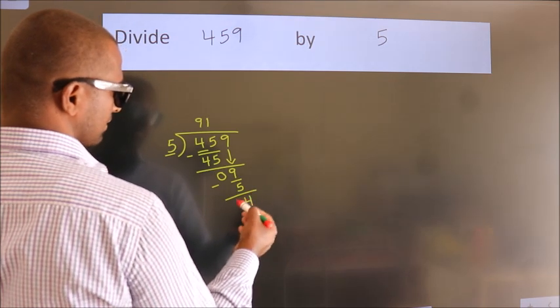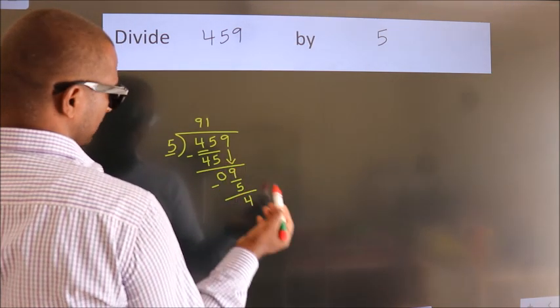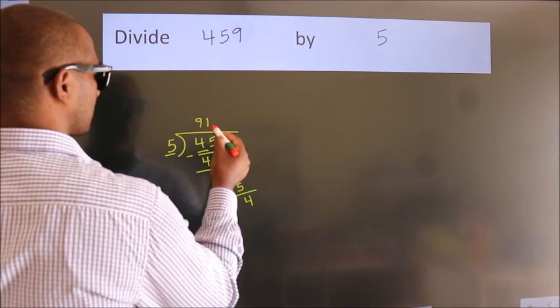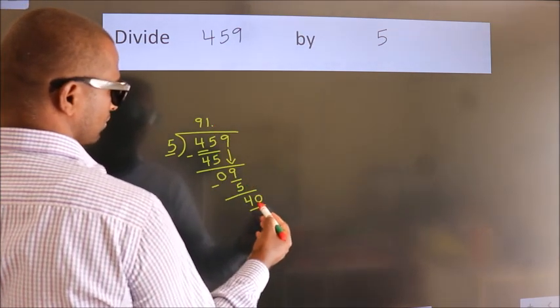After this, no more numbers to bring it down. So what we do is we put dot, take 0. So 40.